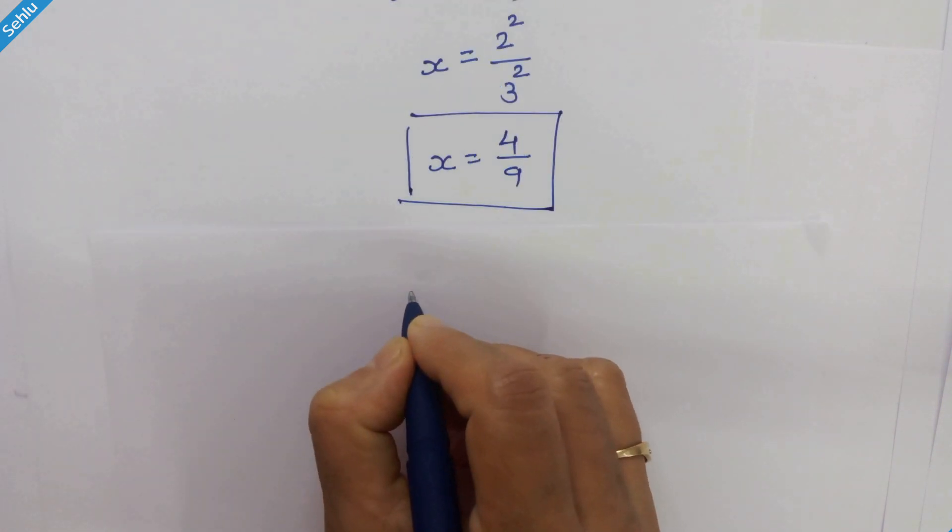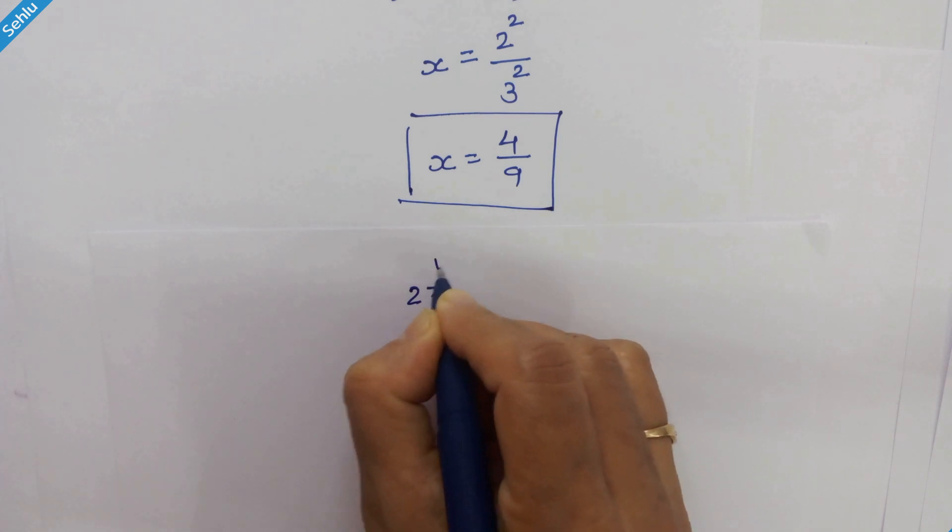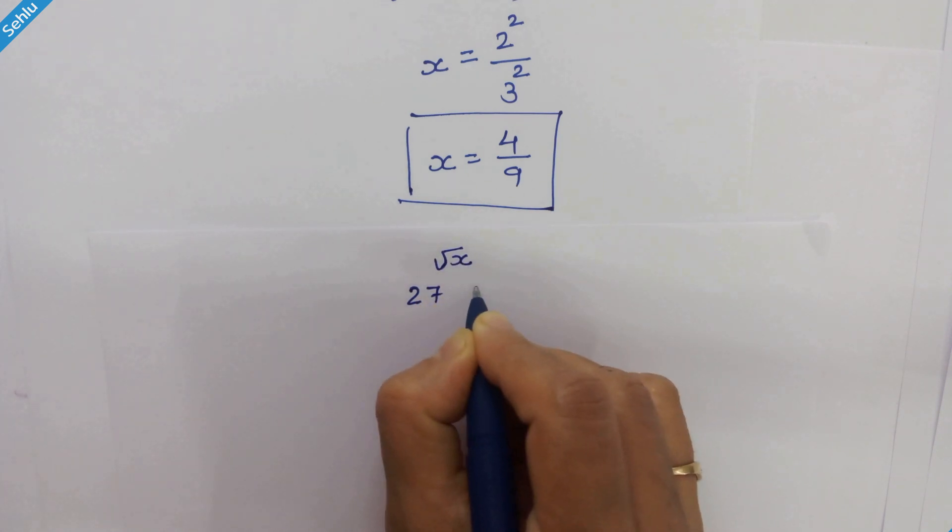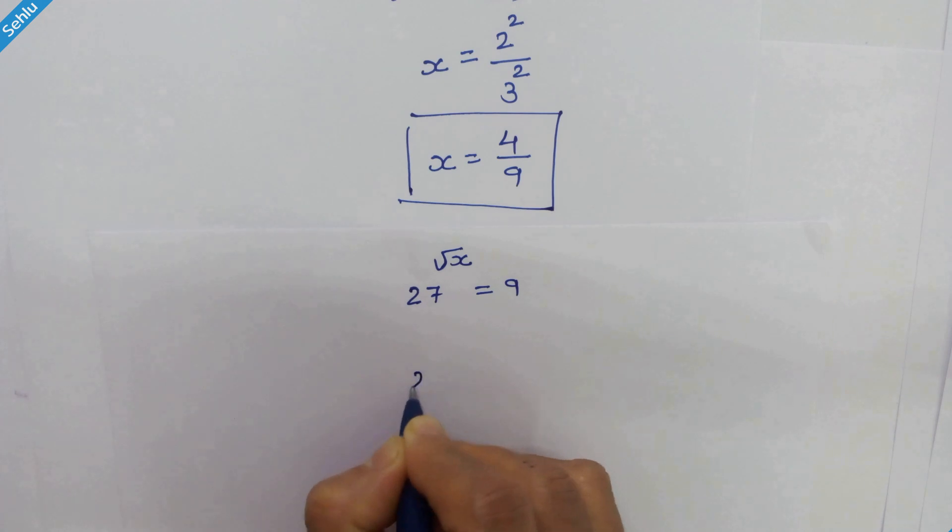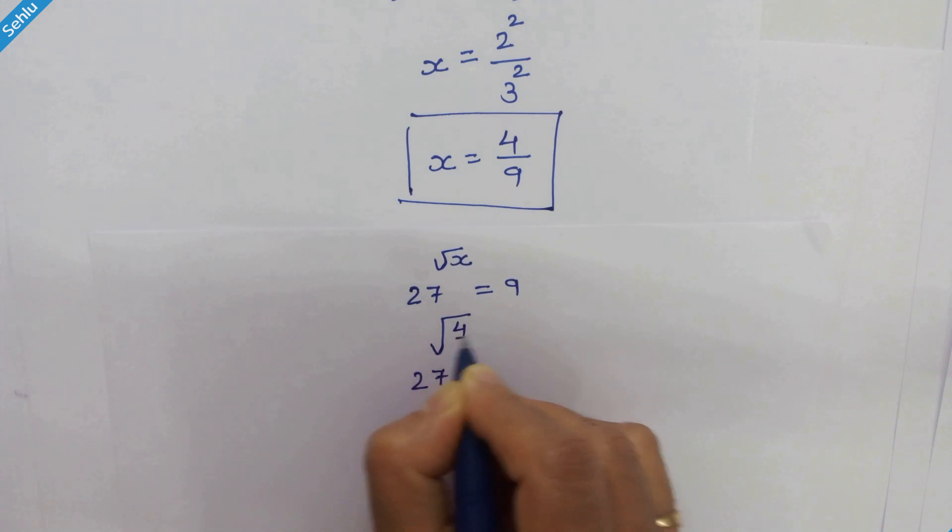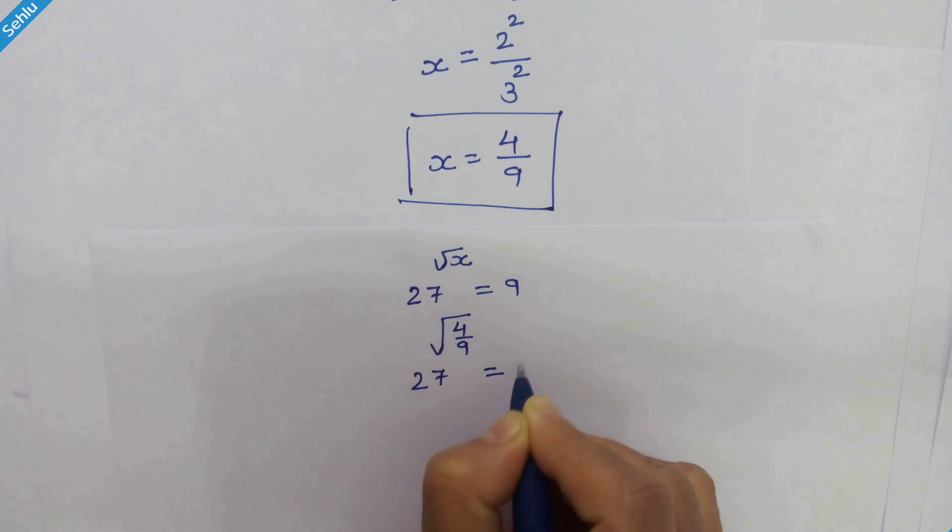Our given question is 27 raised to square root of x equals 9. So 27 raised to square root of 4 upon 9 equals 9. Square root of 4 upon 9 is 2 upon 3, so we will substitute this.